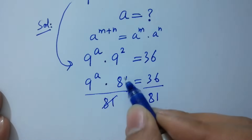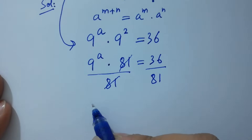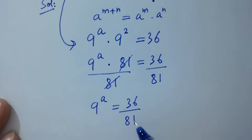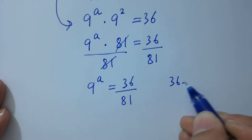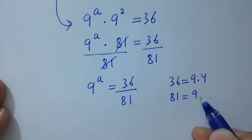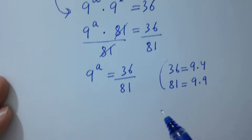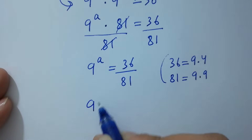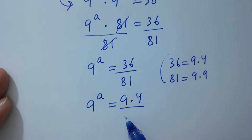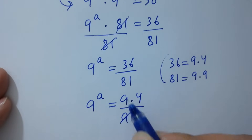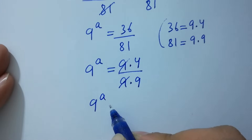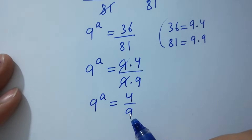9 to the power a times 81 equals 36. Divide by 81 on both sides; 81 and 81 cancel. So 9 to the power a equals 36 over 81. Since 36 equals 9 times 4 and 81 equals 9 times 9, we get 9 to the power a equals 4 over 9.